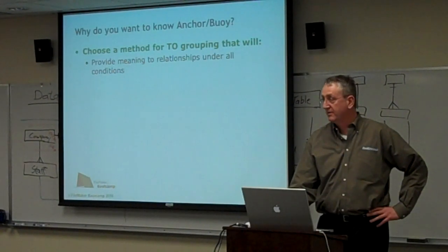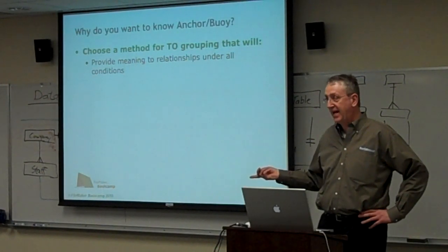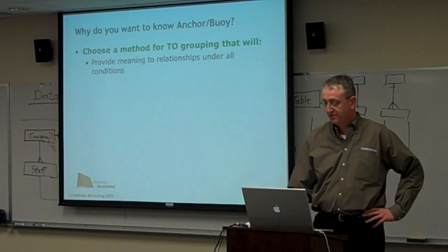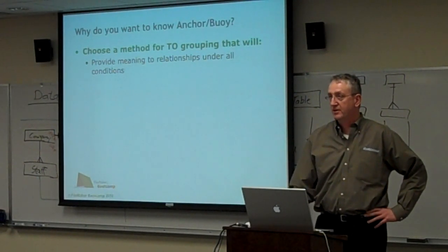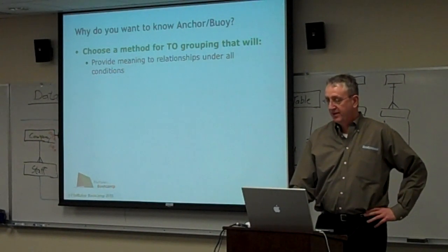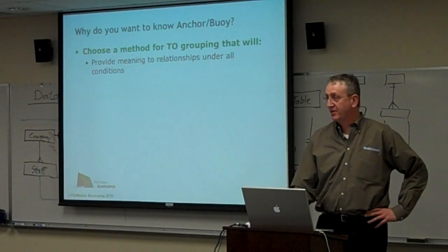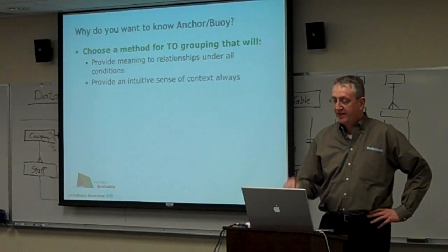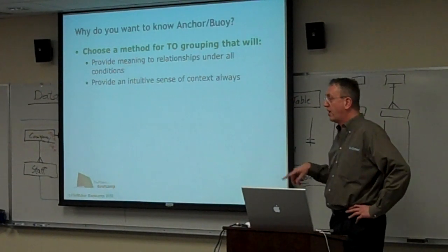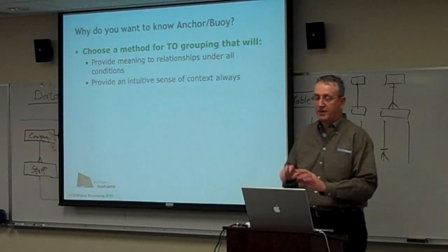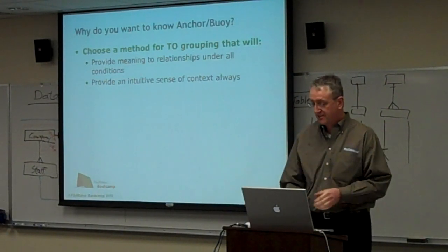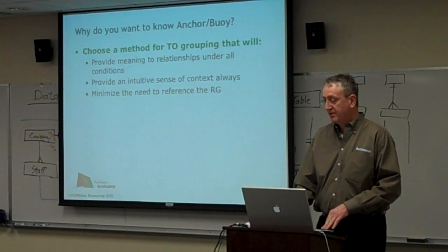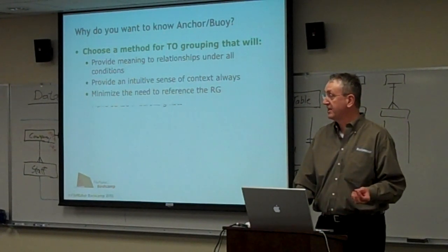I'm going to choose a method of grouping the table occurrences so that the relationships in the graph have meaning under all conditions — they don't become ambiguous or irrelevant. We want to provide an intuitive sense of context always, so no matter where you are in the system or what you're doing, the context will always be consistent. And we want to minimize the reference to the graph because you can memorize most of this.